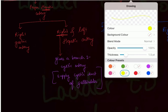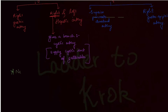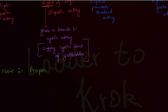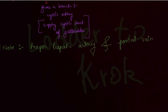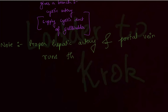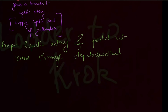An important note: the proper hepatic artery and the portal vein both run in the hepatoduodenal ligament. This is a common exam question — they may give you the structures and ask the name of the ligament, or give the ligament and ask what structures pass through it. The hepatoduodenal ligament connects the liver (hepat) and the duodenum.